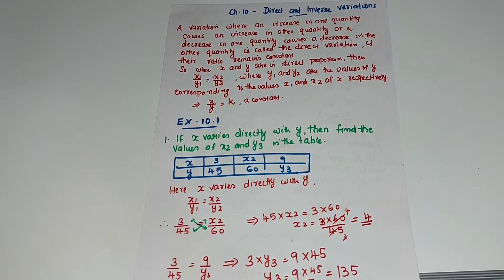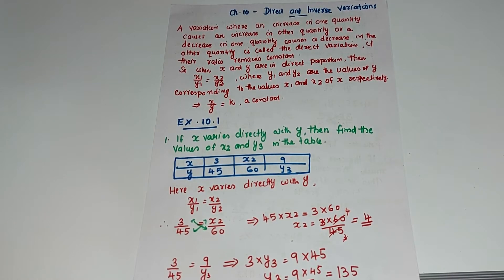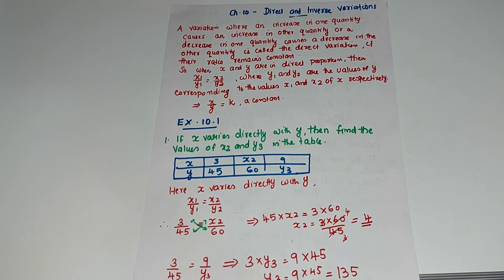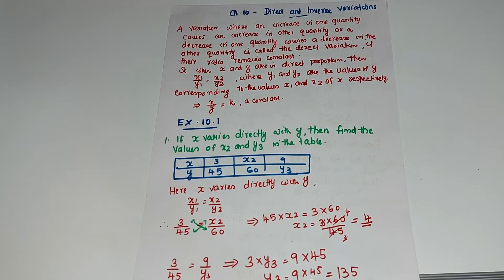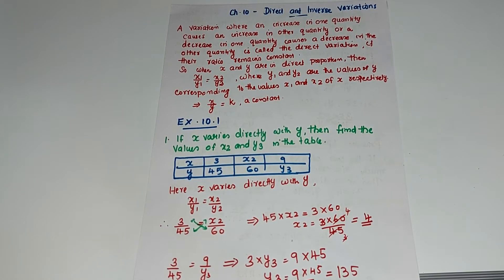If both quantities move in the same direction, it is called direct variation. Before doing exercise 10.1, let's review: a variation where an increase in one quantity causes an increase in the other, or a decrease causes a decrease, is called direct variation, provided the ratio remains constant.